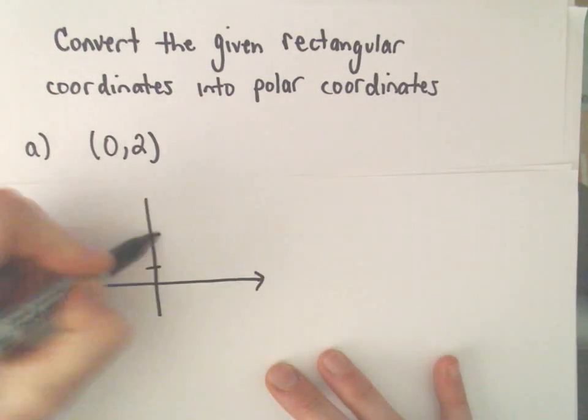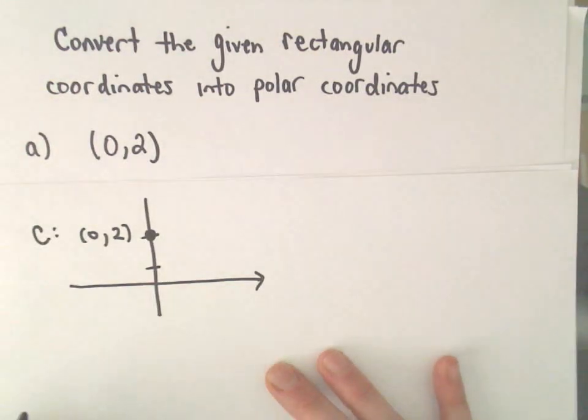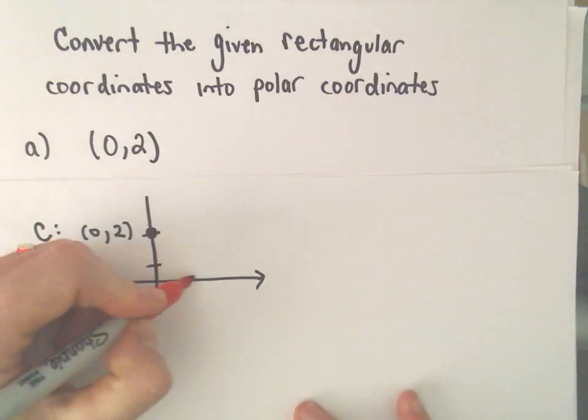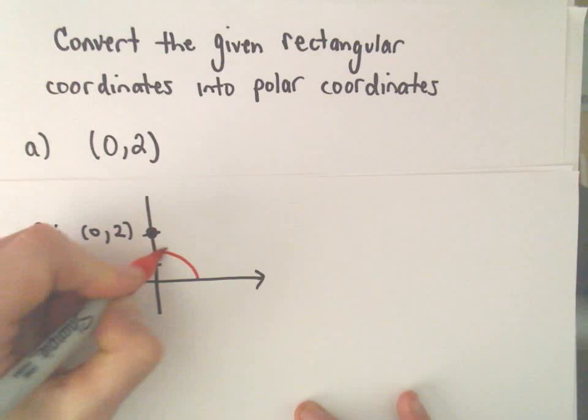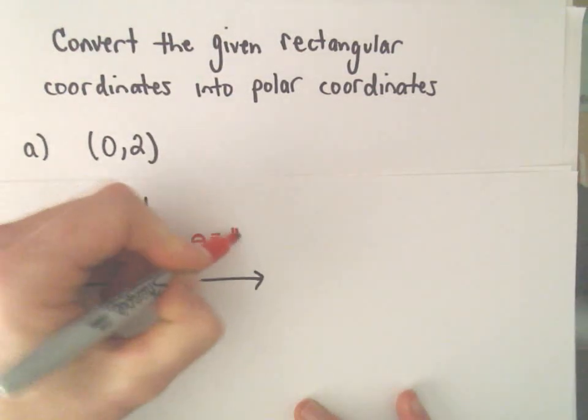If we find the point (0, 2), that would be our point in Cartesian coordinates. In polar coordinates, let's see, a couple things here. Our angle that we would make here in this case, our theta, would just equal pi over 2.